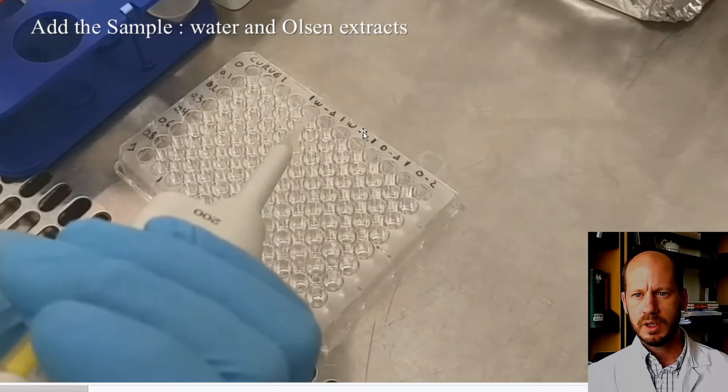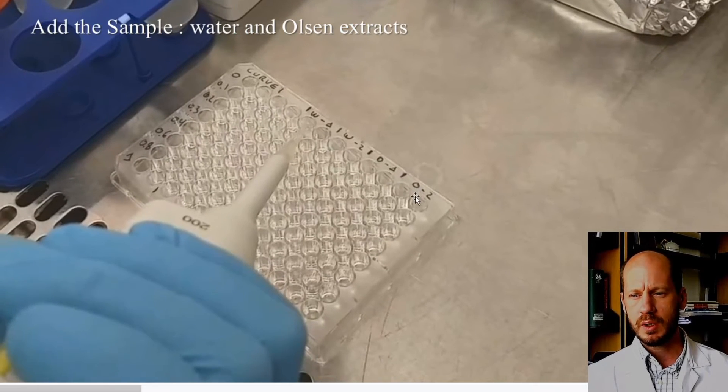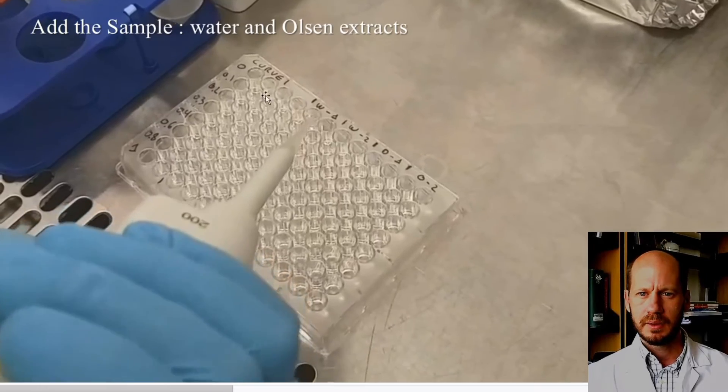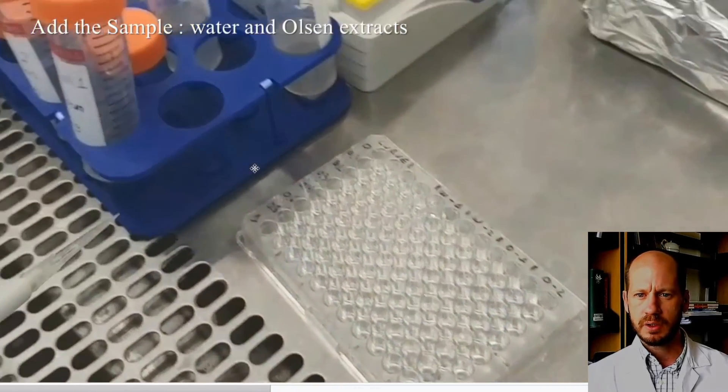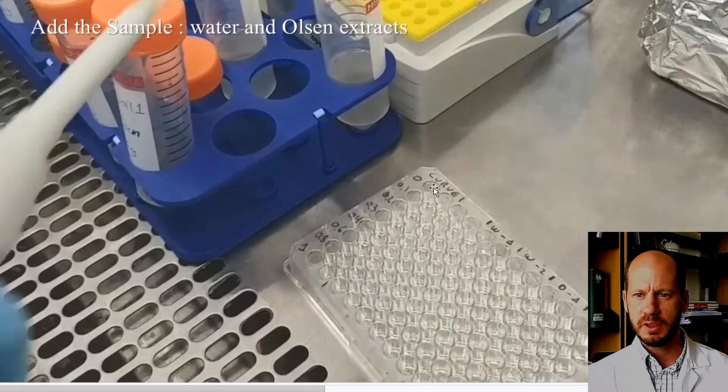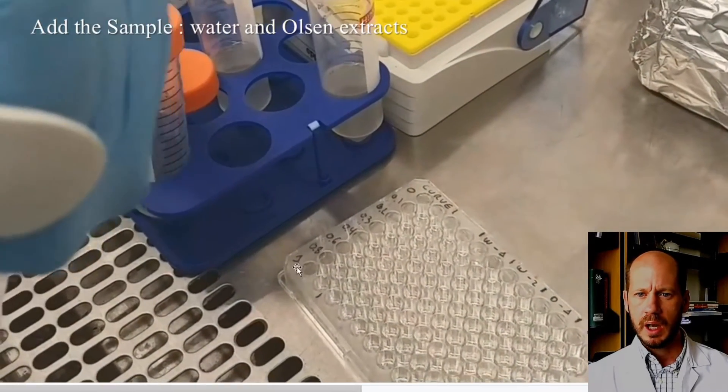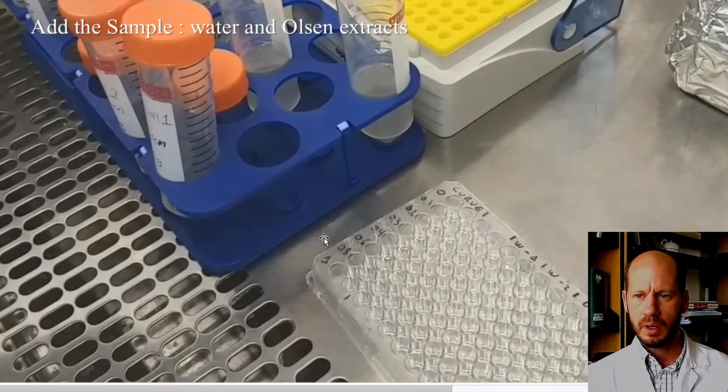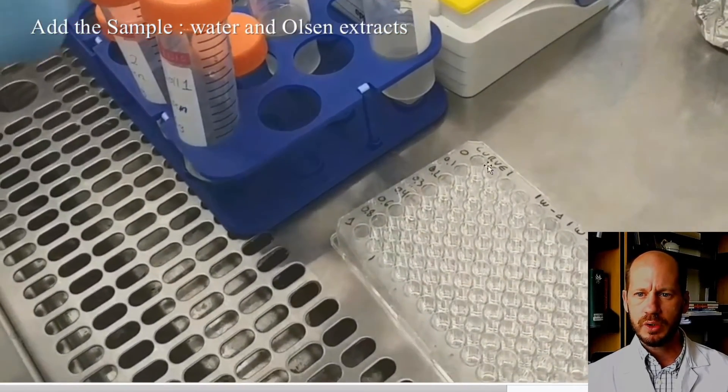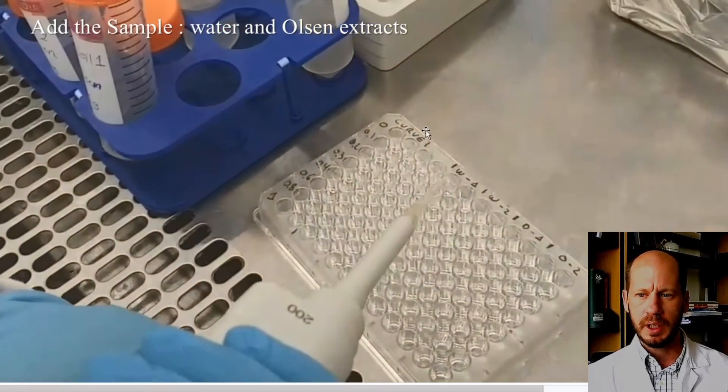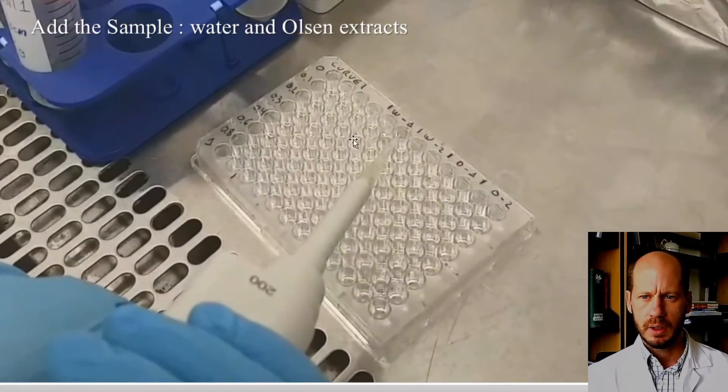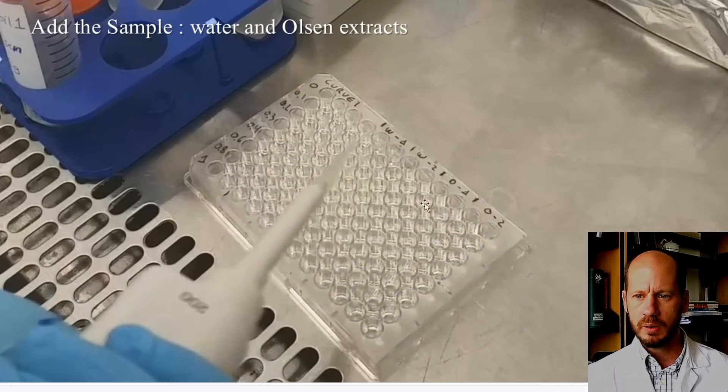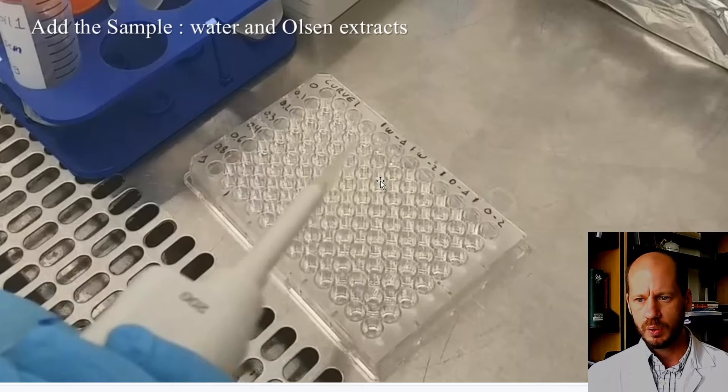Here we're pipetting the samples: water extract 1, water extract 2, Olsen extract 1, Olsen extract 2. The curve is in the first column, from zero which is just water, up to 1 ppm. The first two columns are the curve. Everything we do on the microplate we do in duplicate, just to make sure that the readings are correct.